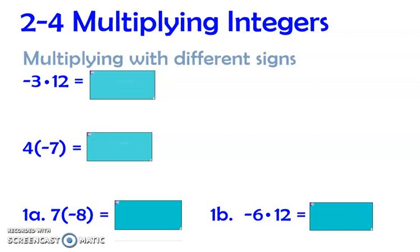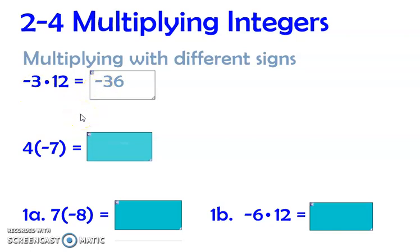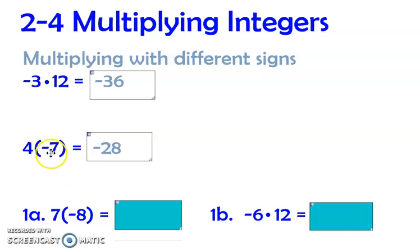These are all like example number one, where you're multiplying numbers with different signs. In this case, you've got negative 3 times positive 12. When that happens you get negative 36 — it's just 3 times 12 with one negative, so it's going to be negative. Now this is 4 times negative 7 — not 4 minus 7, it is 4 times a negative 7.